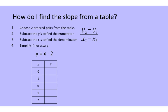Let's jump right into it. How do I find a slope from a table? We're going to find two ordered pairs in that table, and we're going to subtract the y's and the x's — meaning we're going to find the difference or the change. So the first thing we have to do is fill out our table. We're going to take the x value and plug it into the equation.